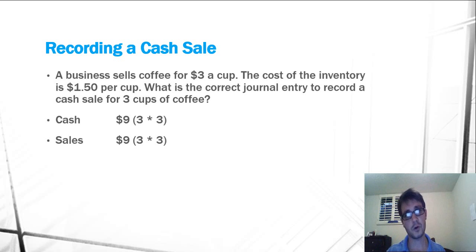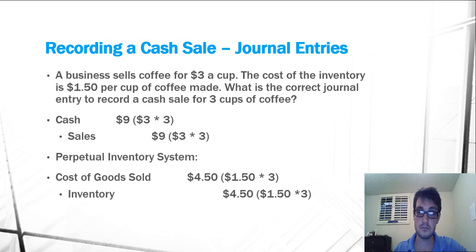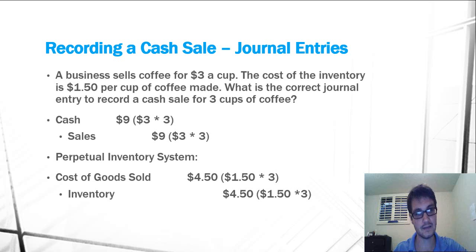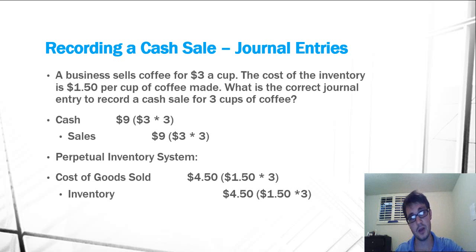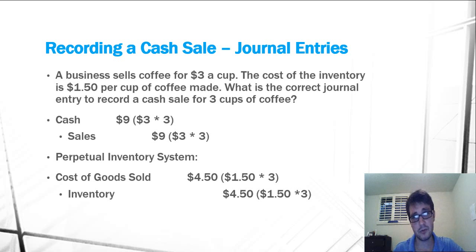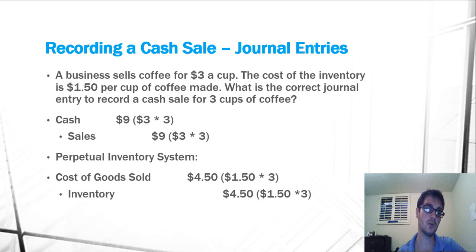So what are the journal entries for this calculation? The journal entries are a debit to cash for $9 and a credit to sales for $9, as well as a debit to cost of goods sold for $4.50 and a credit to inventory for $4.50. I'm using an assumption for this problem — we're going to be using the perpetual inventory system, because it's probably one of the more common inventory systems used.